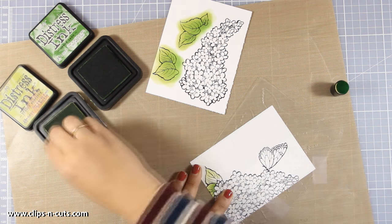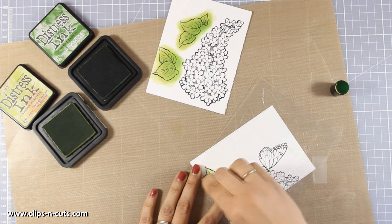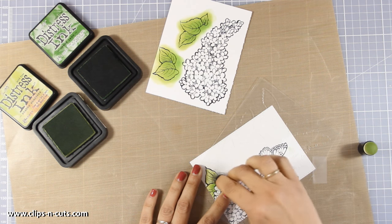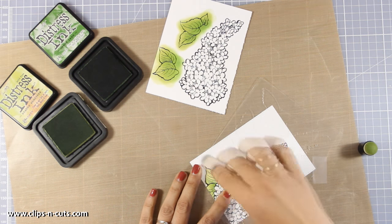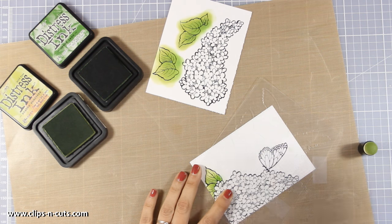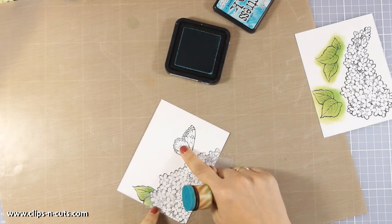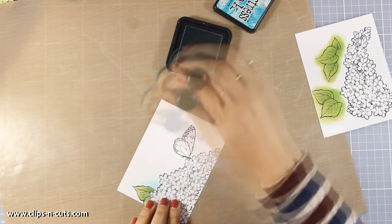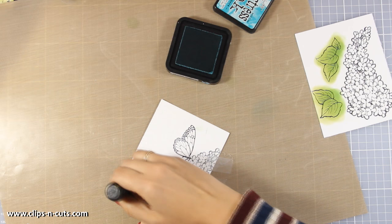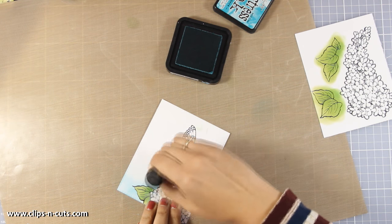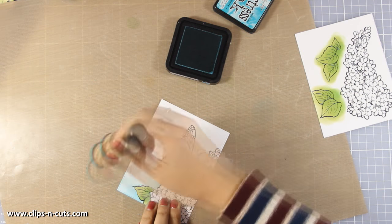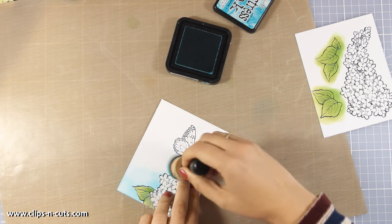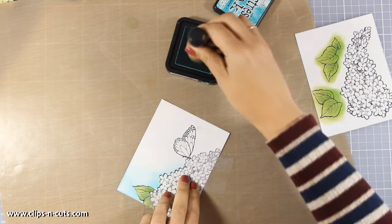Of course you can use your favorite coloring method but I just really love the look, that soft blending that Distress Inks give you. And again I am going to work with the masks that are included in the set just to make sure that I apply peacock feathers all over my sky but at the same time I make sure that everything is nice and neat without adding blue on the areas that I don't want to.